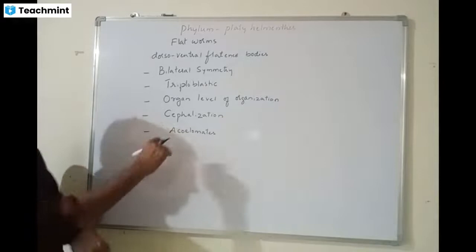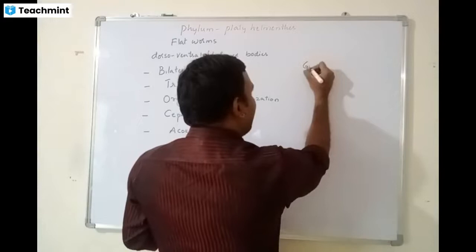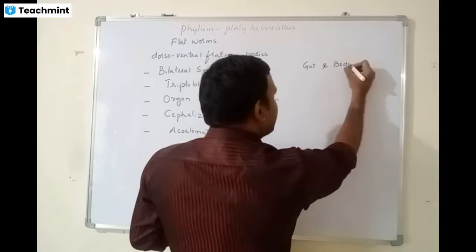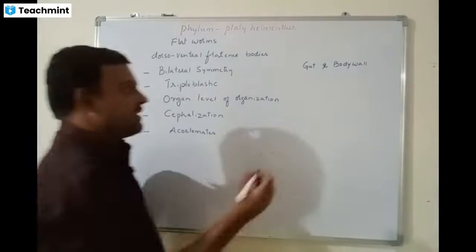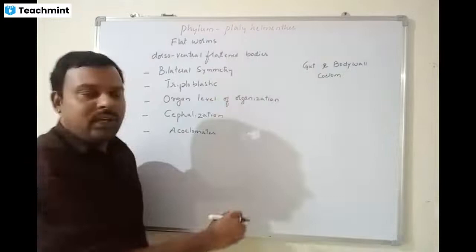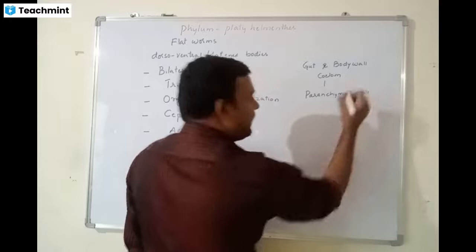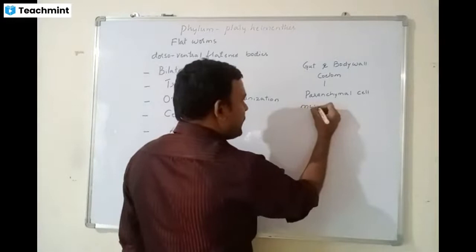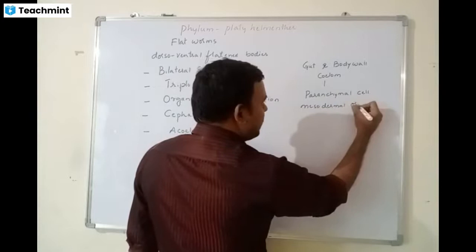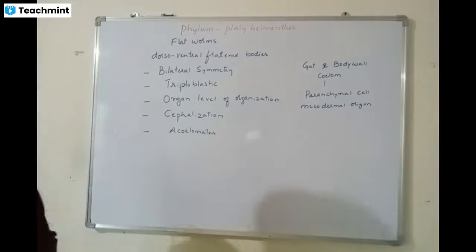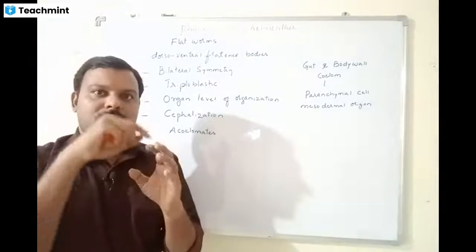The cavity between the gut and body wall is called the acoelomate, and this is filled by special cells called parenchymal cells. Very important — these parenchymal cells are of mesodermal origin. Though they do not have a true coelom, the space between the gut and the body wall is filled by these special parenchymal cells.